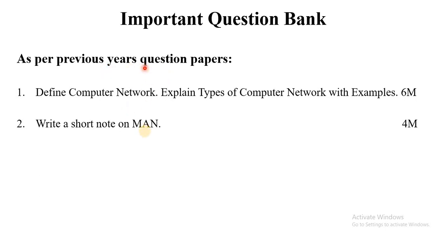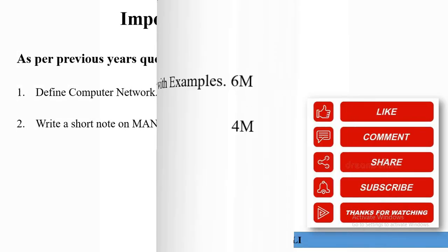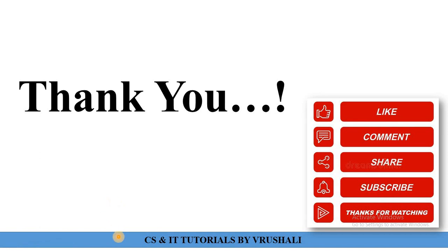As per previous year question papers, these questions are generally asked: first, define computer network and explain types of computer network with examples — here you need to explain all four types shortly with examples for six marks. Another question is: write a short note on MAN — explain what MAN is, its examples, advantages, and disadvantages with diagram for four marks. You should prepare these questions for exam purposes. Thank you, keep learning.